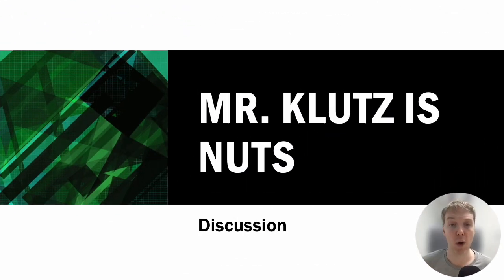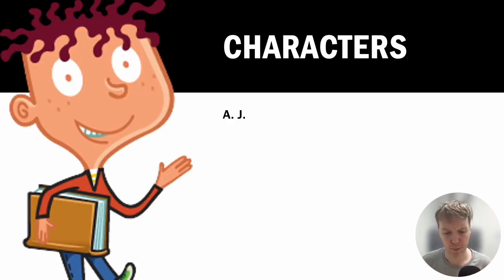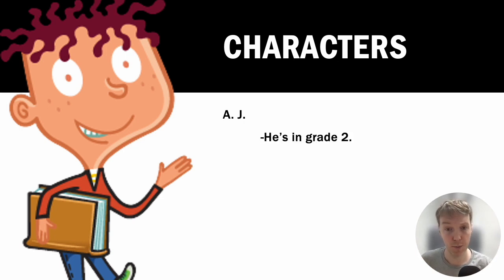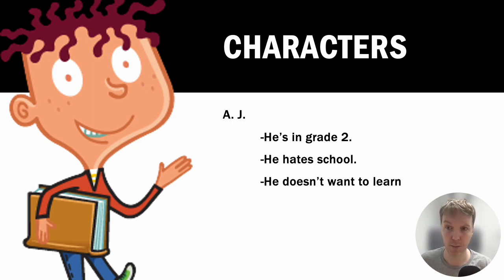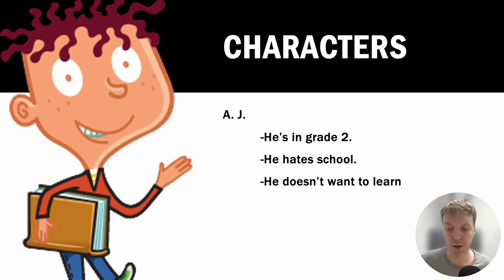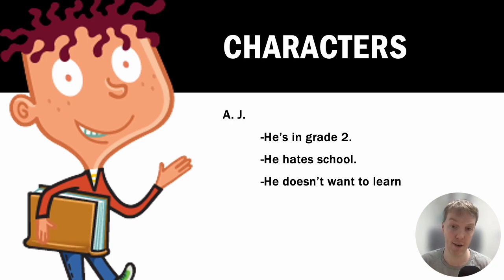Hello everyone, and welcome to the Mr. Klutz is Nuts discussion. Let's talk about the characters. One of the most important characters is AJ. What do we know about AJ? Well, he's in grade two, he hates school, and he doesn't like to learn. He's a lazy student — he doesn't want to do homework. What he wants is to be lazy, and he hopes to become a hockey player when he's older. He thinks he doesn't have to go to school in order to do that.